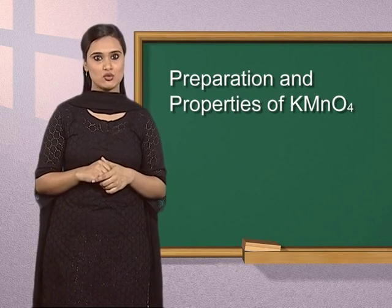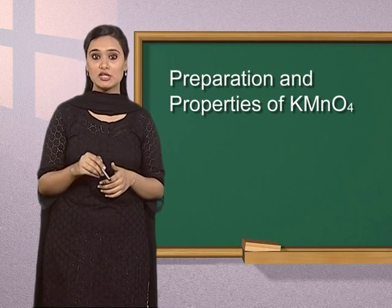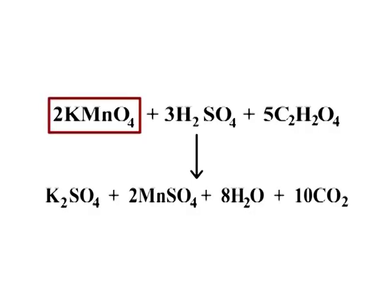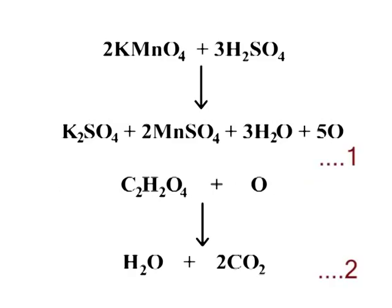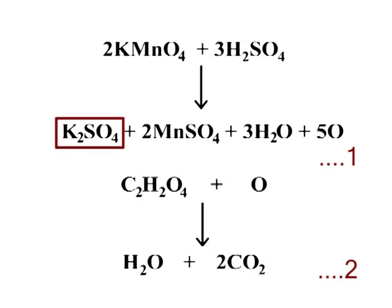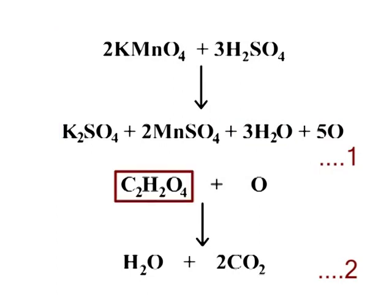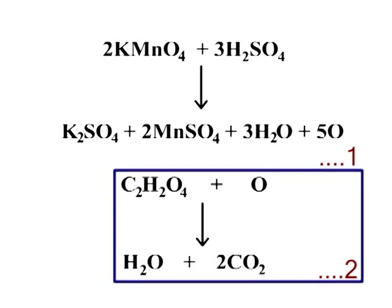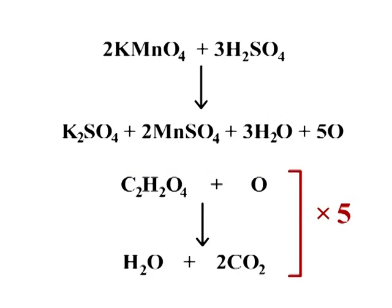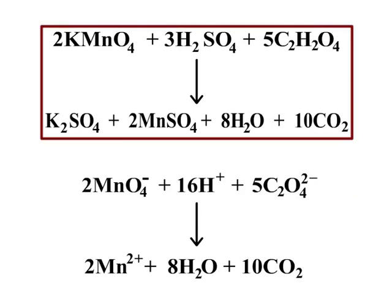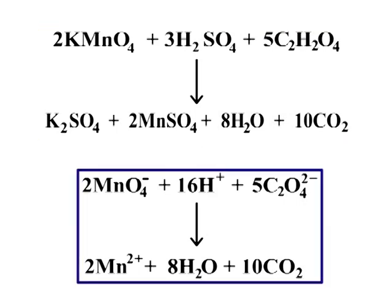Potassium permanganate oxidizes oxalic acid to carbon dioxide gas, proceeding in two steps. In step 1, potassium permanganate reacts with sulfuric acid to form potassium sulfate, manganese sulfate, water and nascent oxygen. In step 2, oxalic acid reacts with nascent oxygen to form water and carbon dioxide. Multiplying equation 2 by 5 and adding to equation 1 gives the overall balanced equation. The relevant ionic equation is also shown.